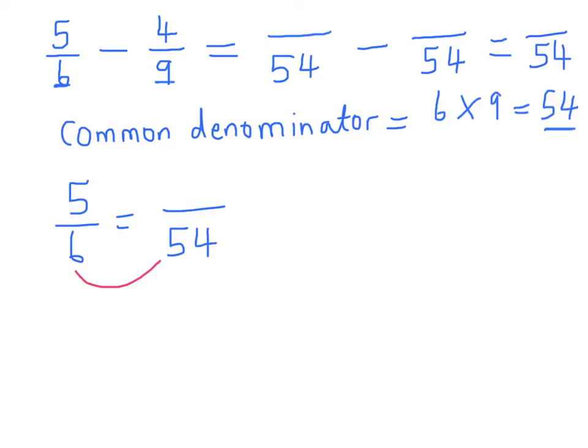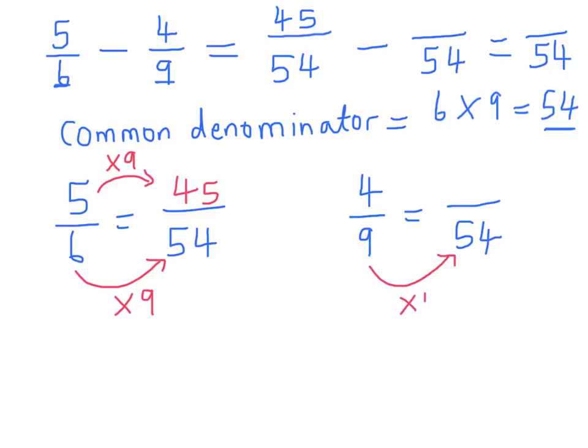Like before, to go from 6 to 54, we multiplied 6 by 9. So to go from 5 to this number here, we have to multiply 5 by 9, and 9 5s are 45. Doing the same with the 4 over 9, to go from 9 to 54, we multiply 4 by 6, and 6 4s are 24. So this value here is 24. Now if I have 45 and I subtract 24 from it, I get 21.